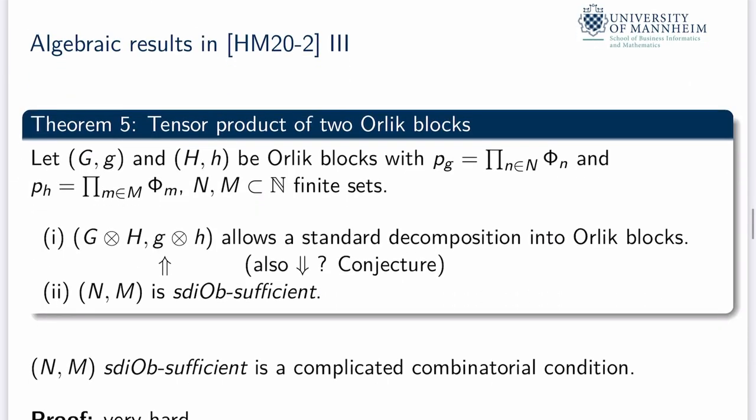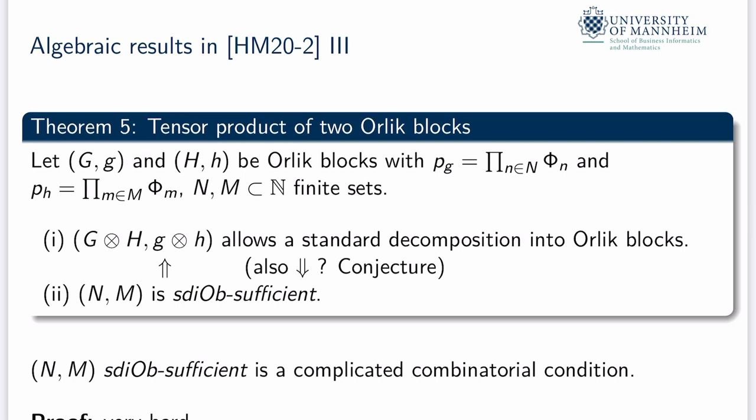The next result is probably the most difficult and has the longest proof in the long paper. We start with two Orlik blocks: lattice G with automorphism g, and lattice H with automorphism h, with sets of orders of eigenvalues N and M respectively. We ask when the tensor product of the lattices, equipped with the tensor product of the automorphisms, allows a standard decomposition into Orlik blocks. Again we have a sufficient condition — a complicated combinatorial condition on the pair of sets N and M — which we know is sufficient, and again we expect it is also necessary. The proof requires a lot of calculations, essentially elementary but quite extensive.